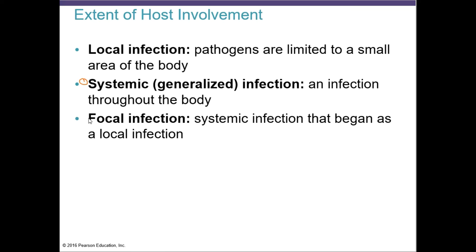A focal infection is what leads to a systemic infection. You have a local infection that can migrate to a second spot — the microbes migrate to another location, making a focal infection. That secondary site is what spreads the disease to multiple places and can become systemic.